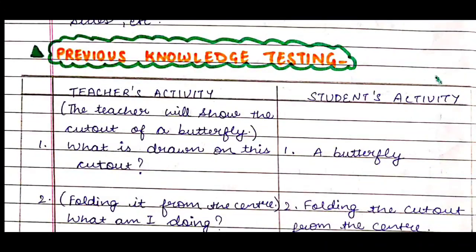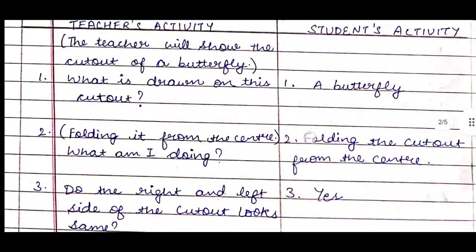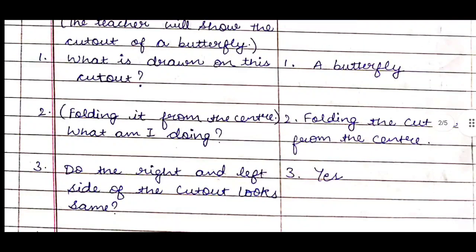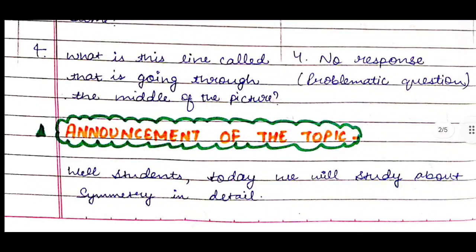To test their previous knowledge, we make two columns: teacher's activity and students' activity. The teacher will show a cutout of a butterfly and ask: what is drawn on this cutout? Students reply: a butterfly. Then the teacher folds it from the center and asks what she is doing. Further questions: do the right and left sides look the same? And: what is the line called that goes through the middle? There will be no response to the last question — it's a problematic question they don't know the answer to.